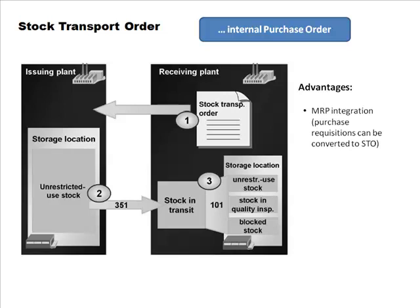When we talked about MRP, we said the planned order can be converted into a purchase order sent to a vendor. Now we're adding that the purchase requisition can be converted into a stock transport order and sent to another internal plant — giving you that additional option which you don't have with a regular stock transfer. MRP integration is a lot cleaner with the stock transport order.